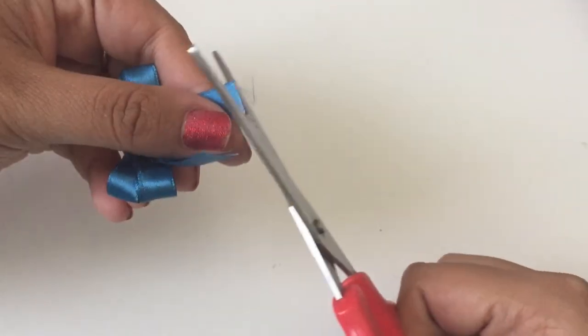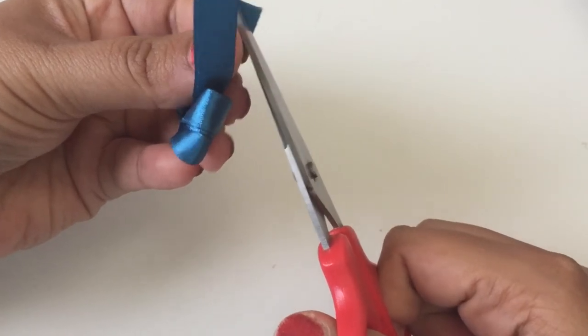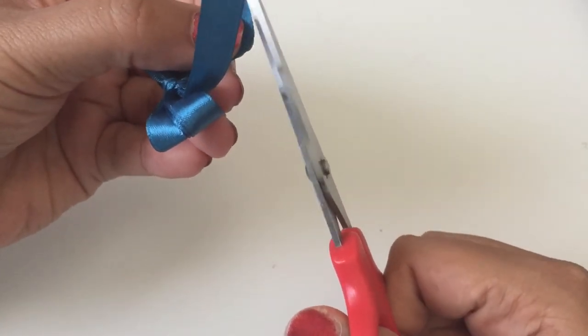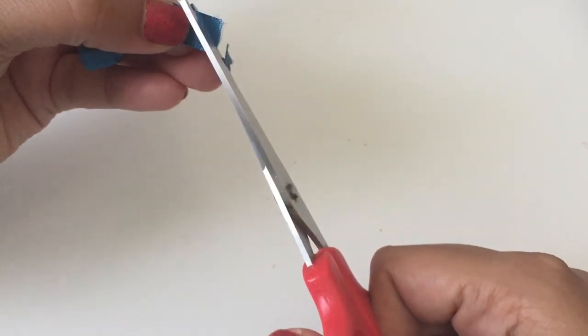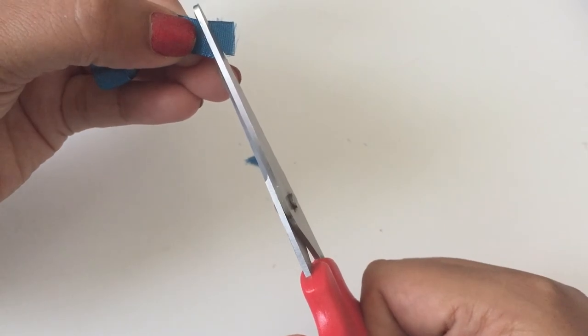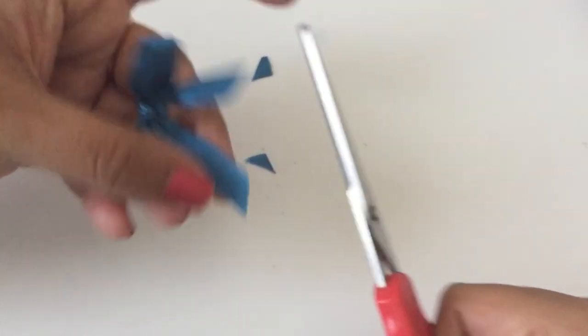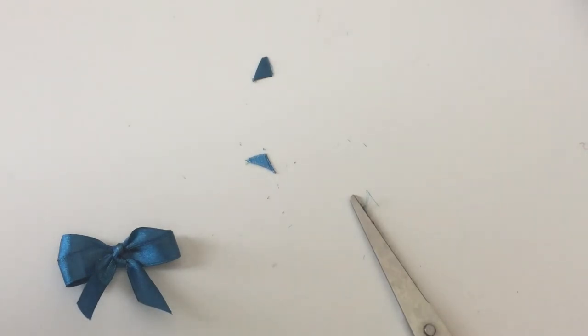Now trim the tails of the bow with a pair of scissors. Thank you for watching.